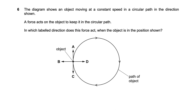Question six asks which direction a force must act for an object to stay in circular motion. The answer is always towards the center. For example, the Earth revolving around the Sun experiences a gravitational force towards the center. For a stone on a thread, the tension provides the centripetal force. So the answer is D.